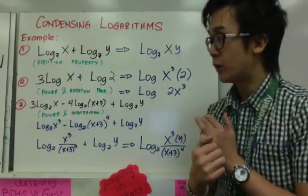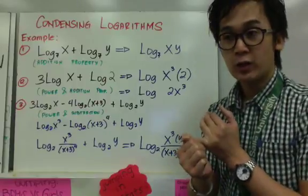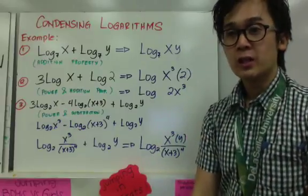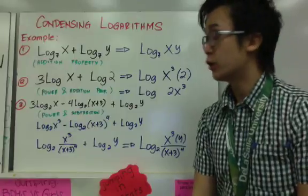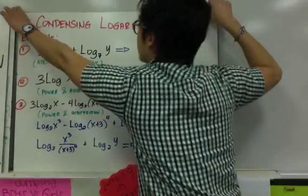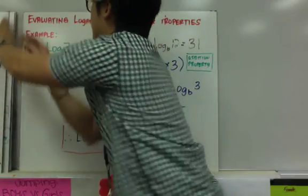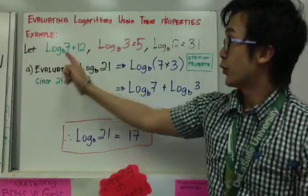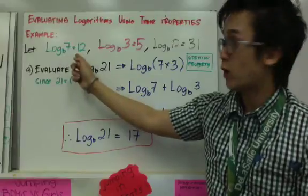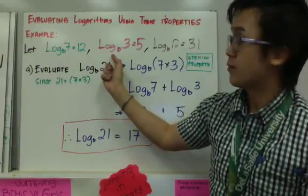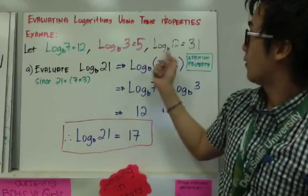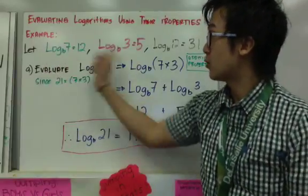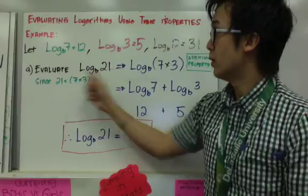Now let's apply the properties of logarithms to solve or simplify an expression. In this example, we have given logarithms: logarithm of 7 base b equals 12, logarithm of 3 base b equals 5, and logarithm of 12 base b equals 31. We will use these three equations to solve for the value of logarithm of 21 base b.